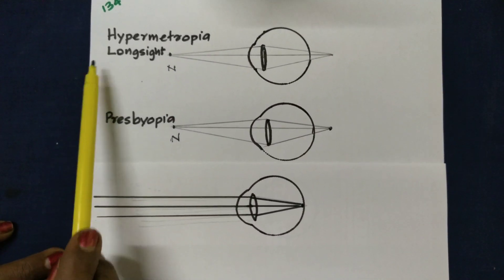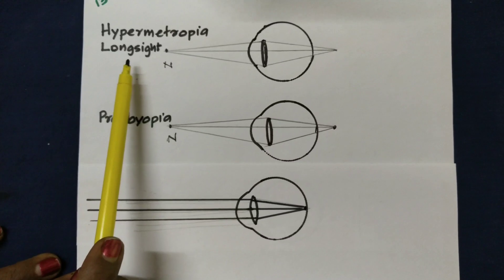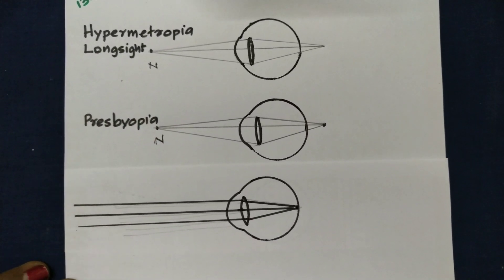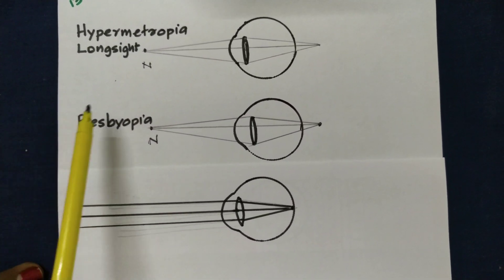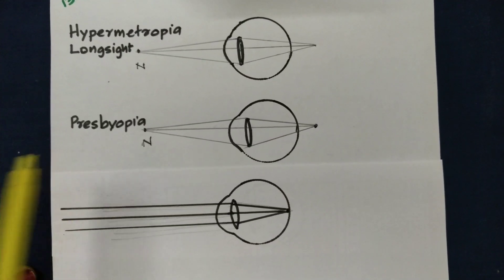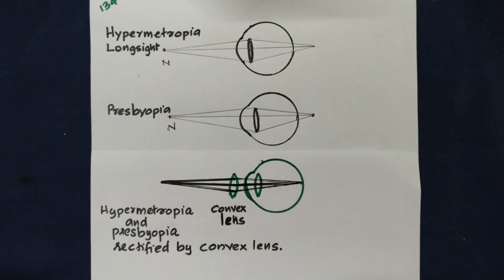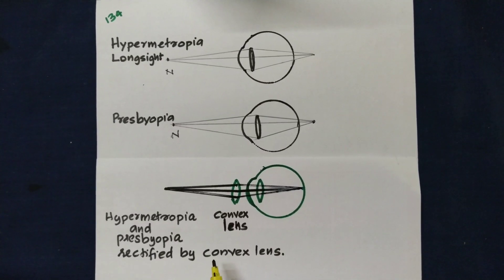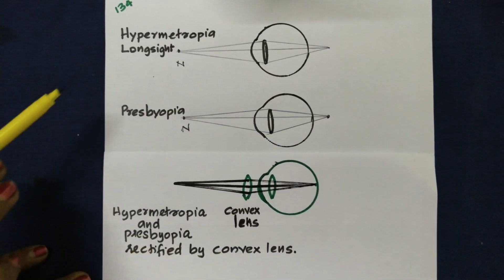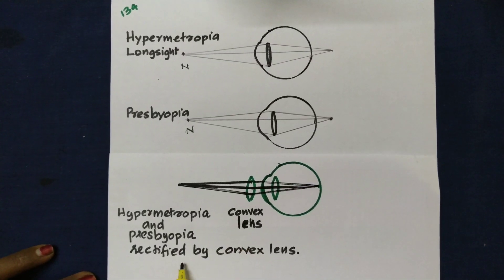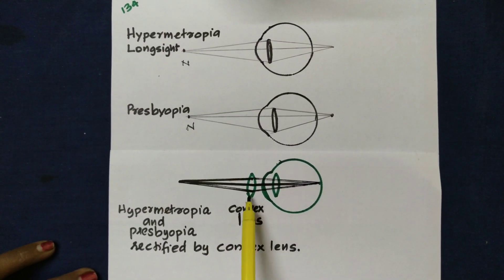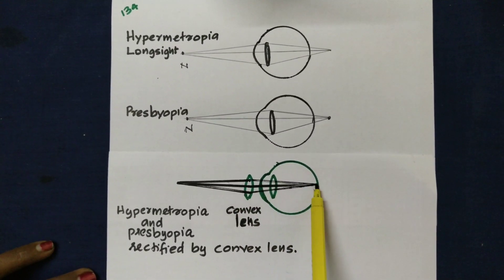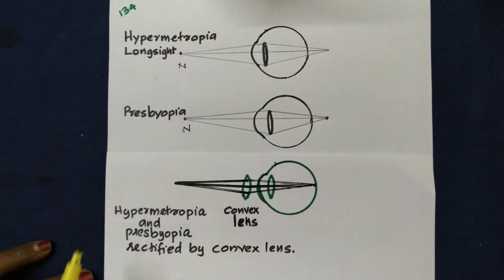Near sight, long sight — hypermetropia is long sight, long distance. The eye will be rectified by a convex lens. You can see a convex lens placed in the eyes; the image will be right on the retina of the eye.